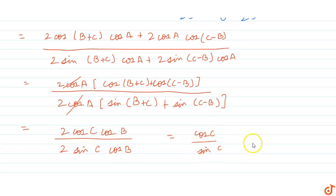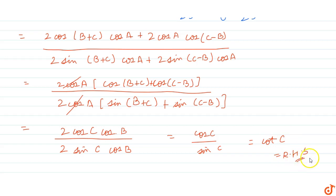After cancellation of 2cos(B), we are left with cos(C) / sin(C), and we know that cos/sin equals cot. So this equals cot(C), which is our right-hand side. Hence the question is proved.